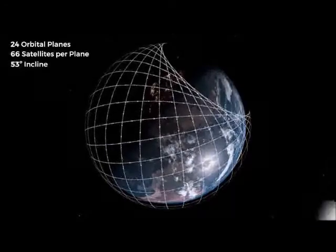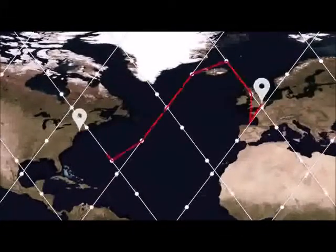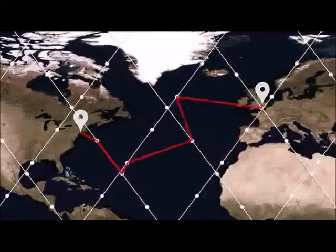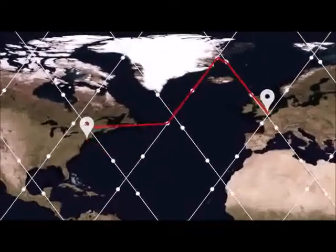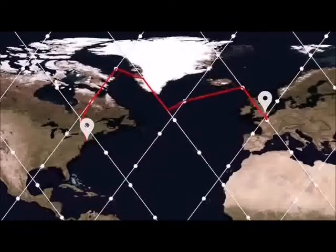But in many cases a single orbital plane will not connect two locations. So we need to be able to transfer information between these planes too. This requires precise tracking, as the satellites travelling in neighbouring orbital planes are travelling incredibly quickly and will come in and out of view.